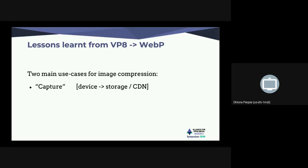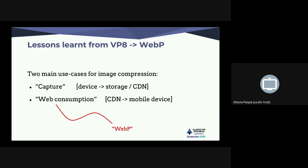When talking about image compression, I need to distinguish between two important cases. The first I call the capture use case: when you take a photo with your device and try to upload it as fast as possible. It's usually high quality, without transparency, fairly large dimensions, and you want to get it to storage or CDN fast. Then there is the WebP use case — web consumption — where once it's on a CDN, you want to consume the image at different formats and resolutions. This is what we are focused on for WebP and the next format.